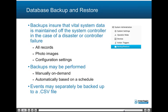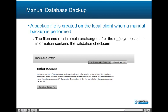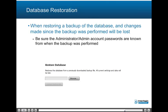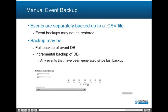Backup and restore: backups ensure that vital system data is maintained off the system controller in case of a disaster or controller failure, including all records, photo images, and configuration settings. Backups may be performed manually on demand or automatically based on a schedule; events may separately be backed up to a CSV file. A backup file is created on the local client when a manual backup is performed; the file name must remain unchanged after the symbol as this information contains the validation checksum. When restoring a database backup, changes made since the backup was performed will be lost; be sure the administrator account passwords are known from when the backup was performed. Event backups may not be restored. Backup may be a full backup of event DB or an incremental backup — any events generated since the last backup.